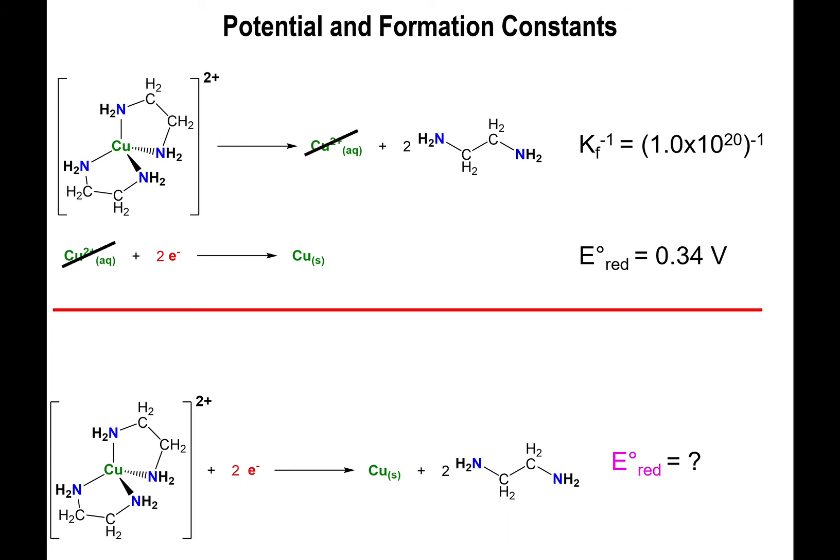We're going to end up with 1.0×10^-20. And so when you add up these equations, you're going to have the coppers canceling out, but then you're going to have complex plus two electrons yields copper metal plus two free ligands, exactly what we have in the desired equation.